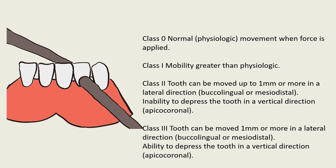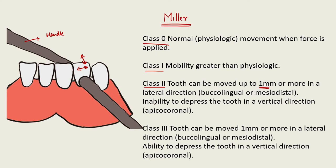There are various grading systems of mobility given by different authors. Let's discuss the grading system given by Miller. He graded mobility based on how the tooth reacts when held between the handles of two instruments and pressure is applied. Class 0 means normal physiologic movement. Class 1 means mobility is greater than physiologic mobility. Class 2 means the tooth can be moved up to 1 mm or more in the lateral direction — either buccolingual or mesiodistal — but you are unable to depress the tooth in the vertical direction within the socket. Class 3 means the tooth can be moved 1 mm or more laterally, and there is also ability to depress the tooth in the apico-coronal vertical direction.